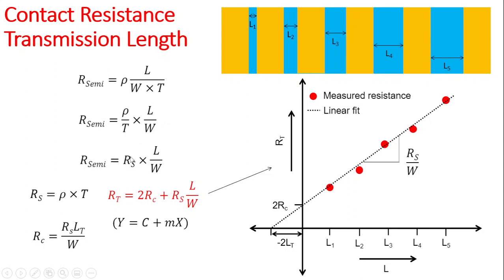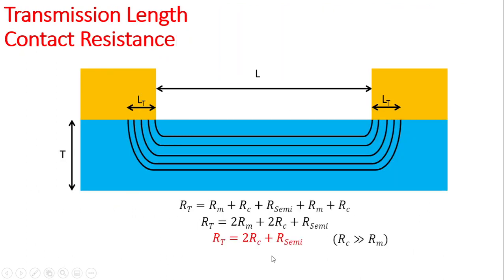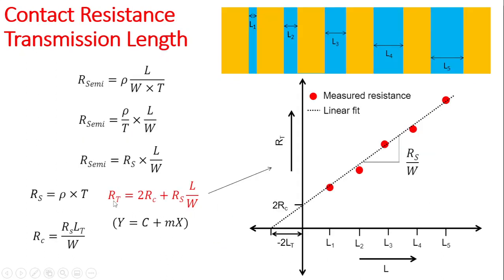Finally, if you put that into this equation, you will get that the total resistance is 2Rc + Rs(L/W). Now this equation is of the form Y = mX + C.